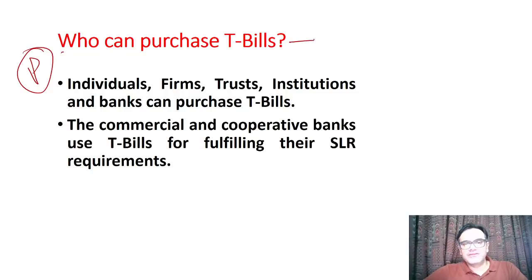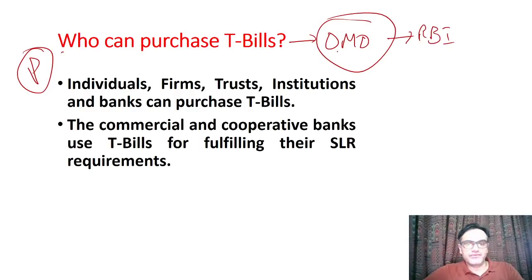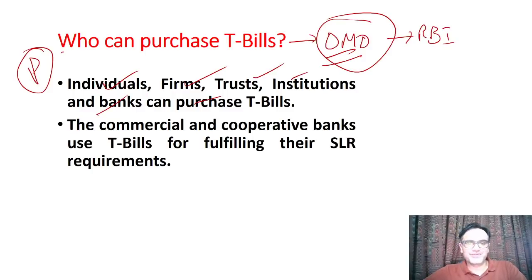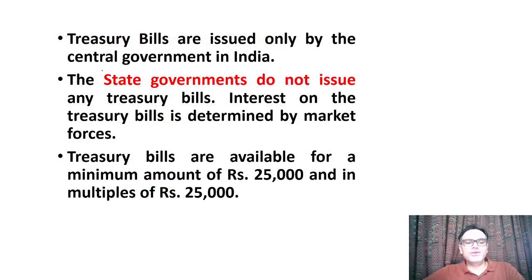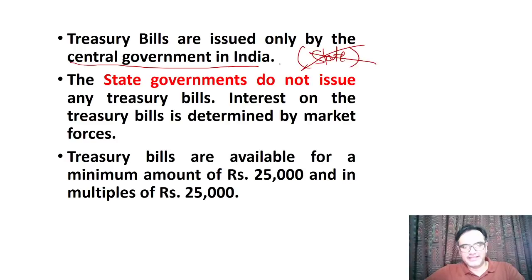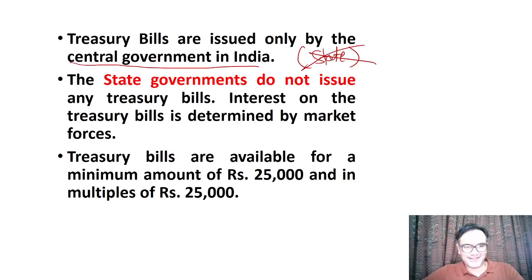Most of the sale of treasury bills is done by open market operations (OMO) through RBI. When called open market, anybody can participate — individuals, firms, trusts, institutions, banks, NBFCs. Commercial and cooperative banks use T-bills for fulfilling their SLR requirements. Treasury bills are issued only by the central government; state governments cannot issue them. Sometimes in newspapers this is used wrongly — be very careful.